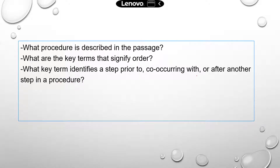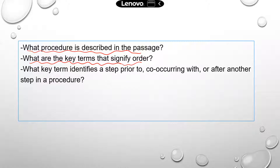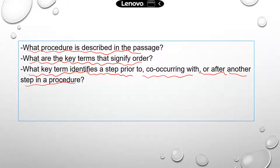Here are the common questions you might see for this type of reading question. For example: what procedure is described in the passage? Can you identify the key terms that signify order? They may give you a set of words and ask which one actually indicates the order of steps. You also need to know terms that identify a step occurring before, after, or at the same time as another step.